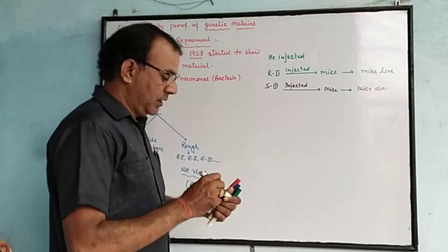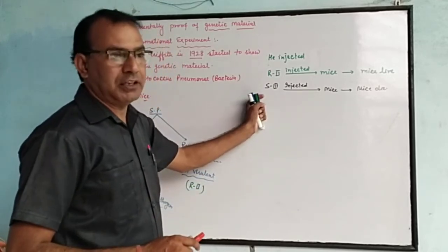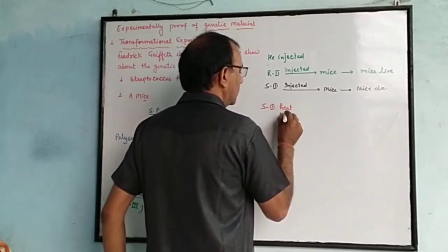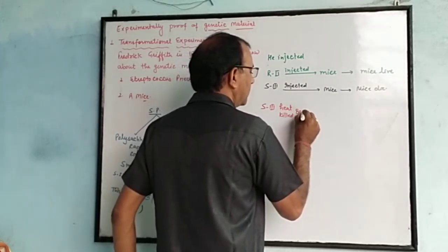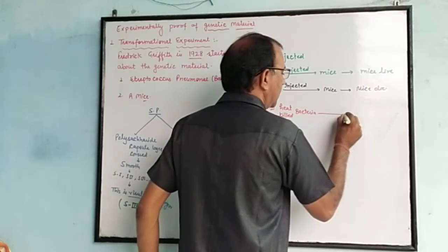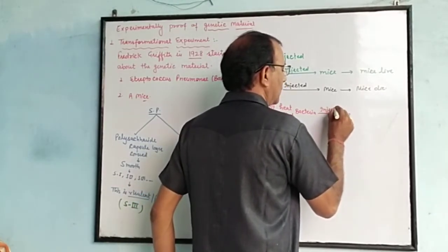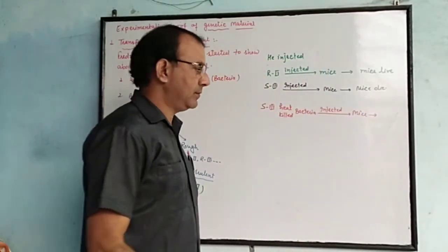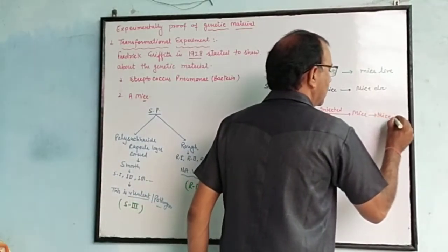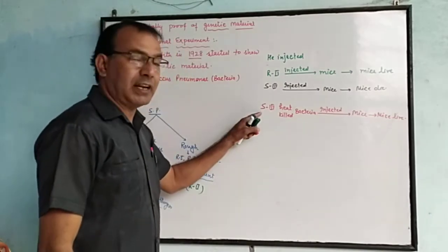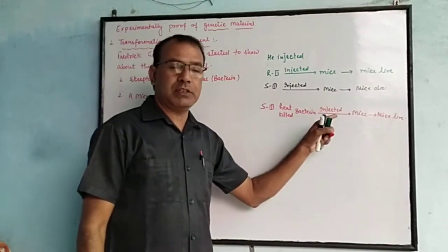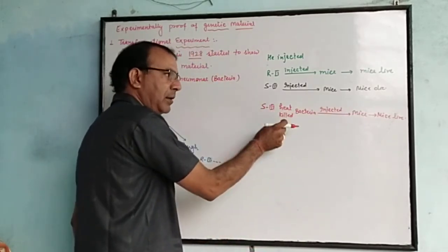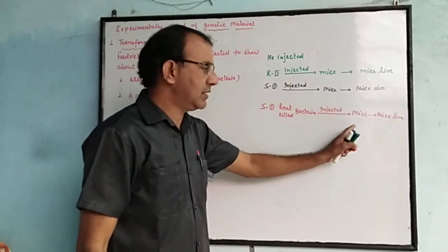He again experimented. He killed S3 bacteria using heat, making heat-killed S3 bacteria, and injected them into the mice. At that time, the mice lived. He observed that there is something in S3 that causes the death of mice, but heat-killed S3 bacteria did not kill the mice.